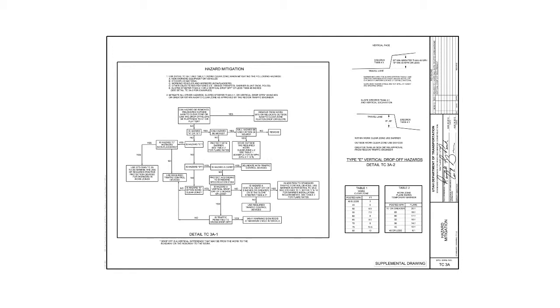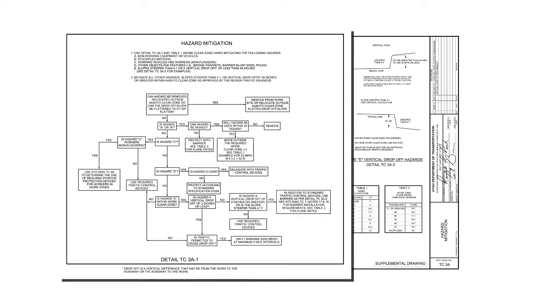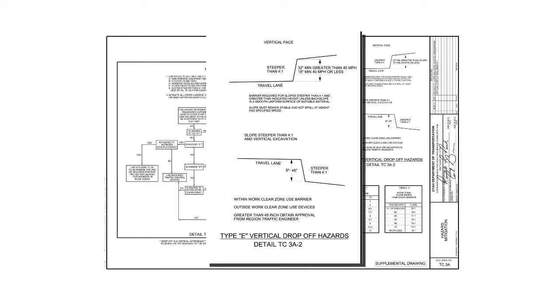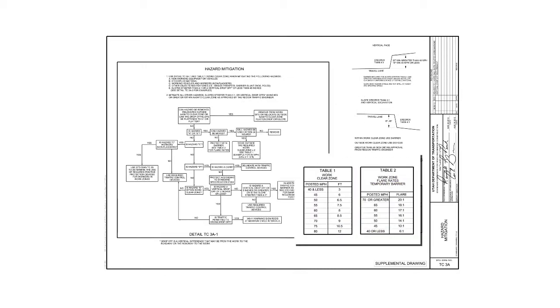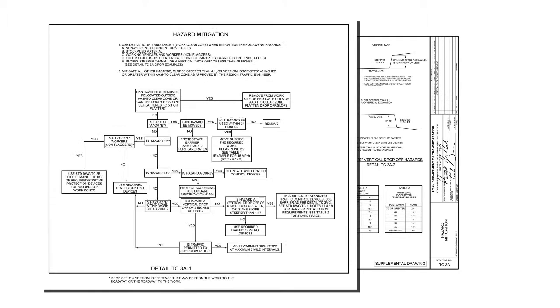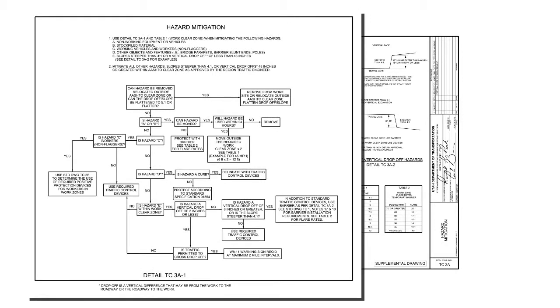Each section of this drawing is referenced throughout the TC series, so it is important that you become familiar with this drawing. The drawing includes three sections: Detail TC3A-1 hazard mitigation chart; Detail TC3A-2 that deals with hazard Type E vertical drop-off hazards; Table 1 deals with work clear zones; and Table 2 deals with work zone flare rates for temporary barrier.